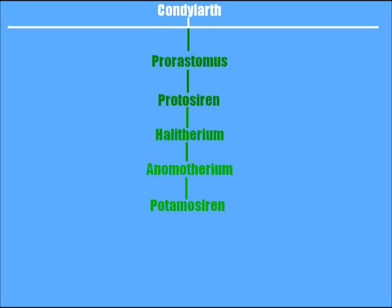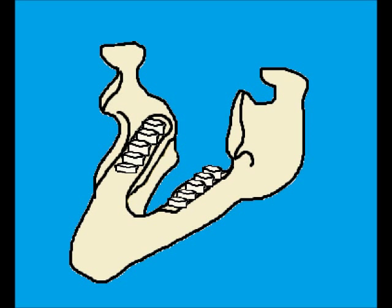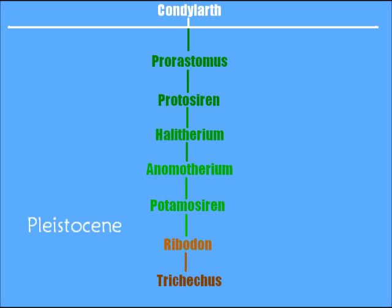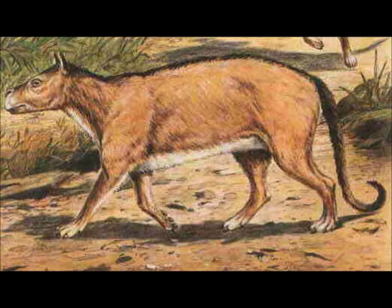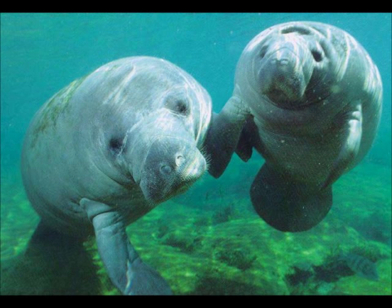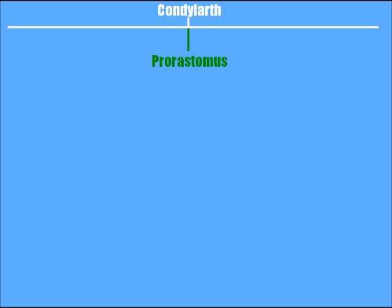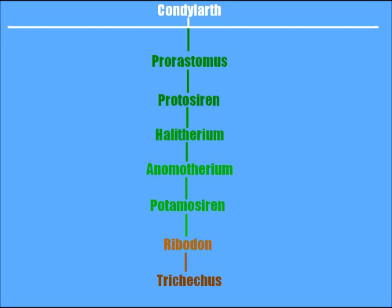The Halotherium evolved into the Anemotherium, which evolved into the Podomosiren during the late Miocene epoch. The Podomosiren strongly resembled the manatee and had a similar pattern of tooth loss. The Podomosiren evolved into the Ribodon during the Pliocene, and the modern manatee we know today appeared during the Pleistocene epoch. Despite the fact that it took several epochs for the manatee to evolve, the rate of evolution was punctuated equilibrium — the change from condylarth to Prorastomus was drastic and relatively short, but subsequent changes were minor and long, with intermediate species remaining relatively the same.